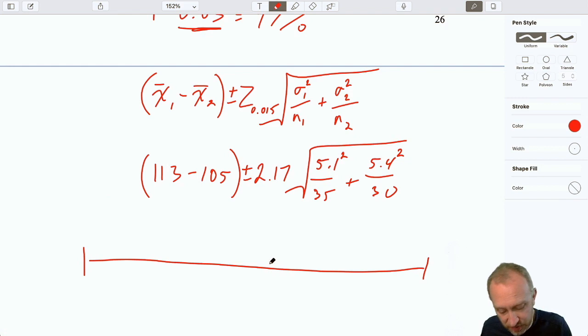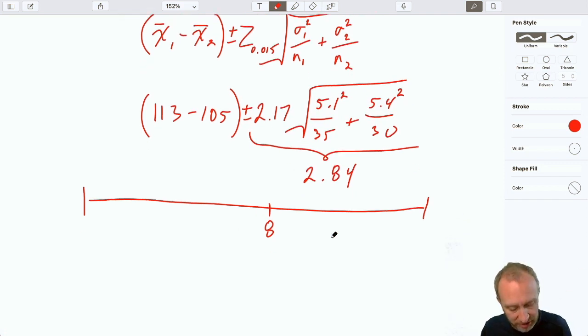Now, once again, I am going to calculate that margin of error separately. Just because I find it's easier to do it in a couple of steps, rather than cranking all of these numbers through my calculator at once. A little more room for error there. So, here I have my point estimate is 8. That margin of error, so that's just this piece here, is 2.17 times the square root of 5.1 squared over 35, 5.4 squared over 30. So, my margin of error here is 2.84. So, now I can calculate my upper and lower limits. This is going to be 10.84. And this is going to be 8 minus 5.16.